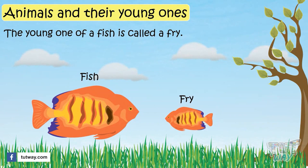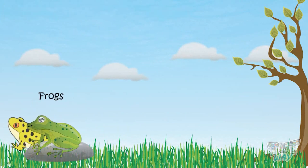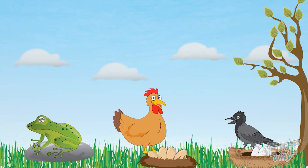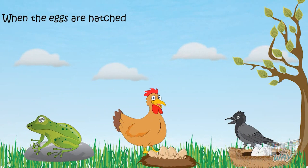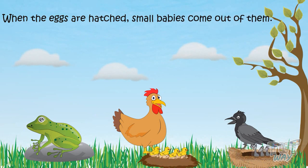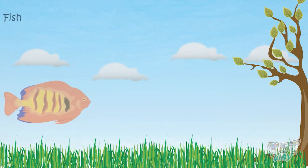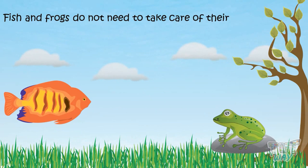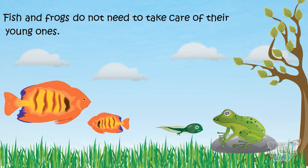So we learned the names of young ones of animals. Some animals like frogs, hens, and crows lay eggs. When the eggs are hatched, small babies come out of them. Some animals like fish and frogs do not need to take care of their young ones. There are also some very interesting facts about the cuckoo.